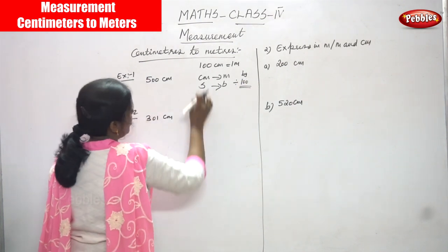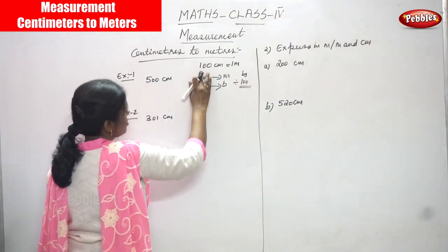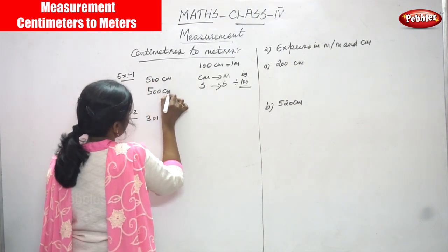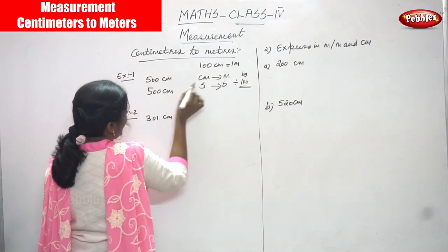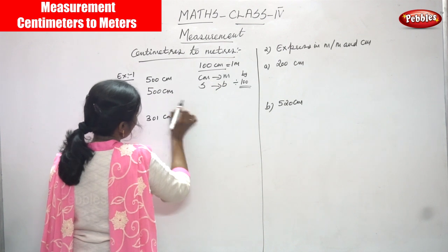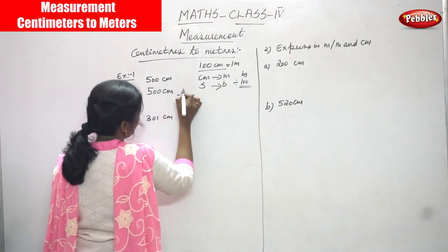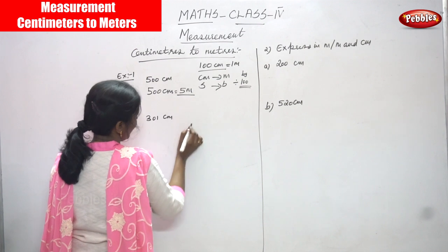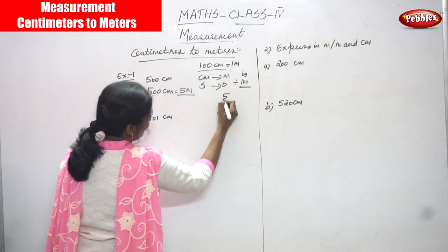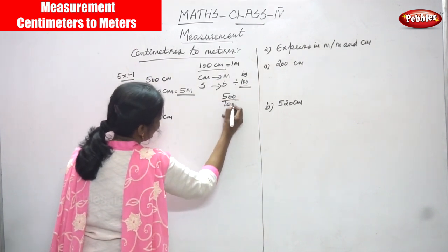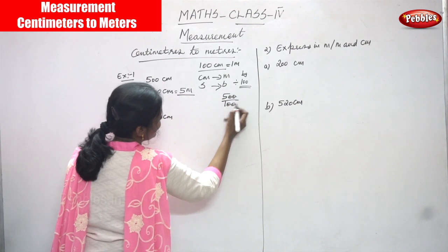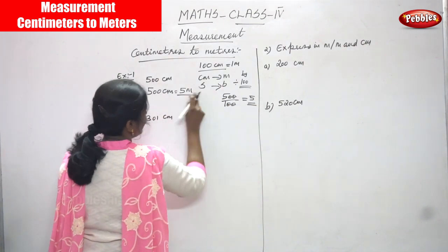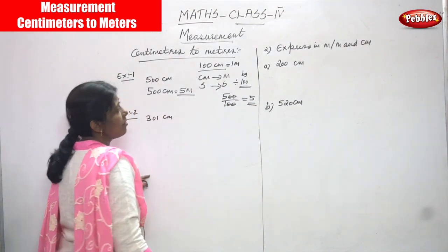So 100 centimeters equal to 1 meter. So 500 centimeters — you have to convert 500 centimeters. What will you get? 5 meters. That means 500 is divided by 100. You cancel these two zeros, so 5 divided by 1 gives you 5. The answer is 5 meters.